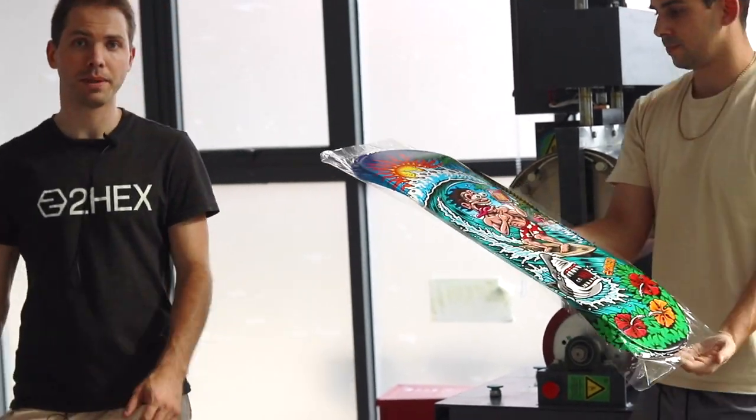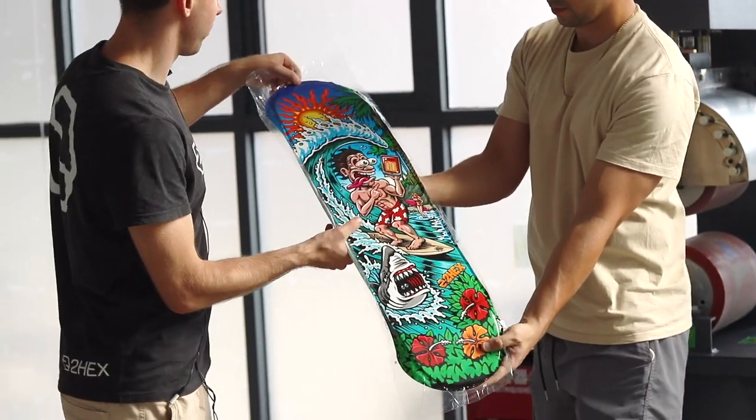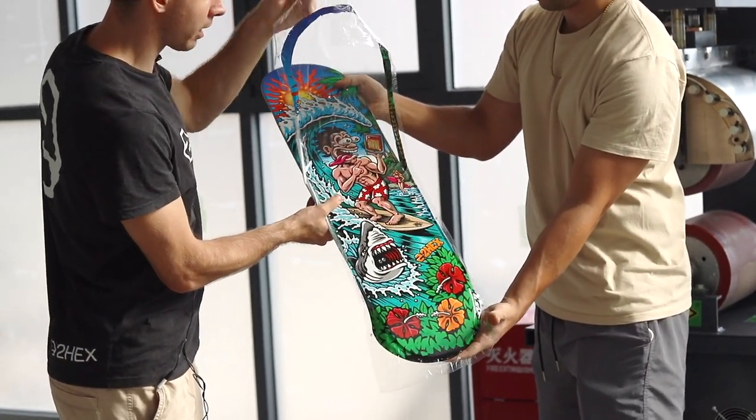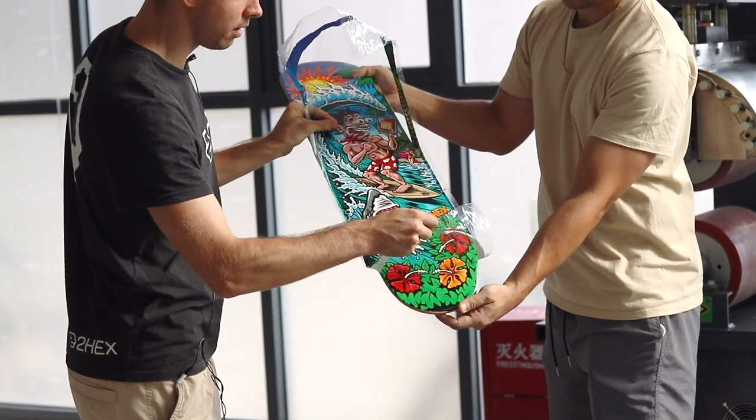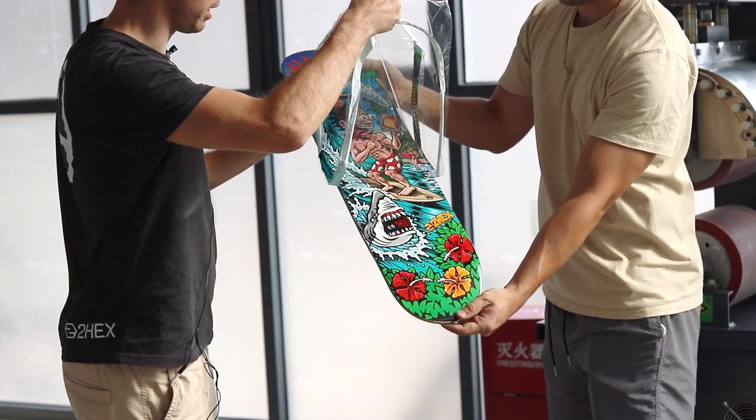After printing on the deck you can peel off the heat transfer, starting from the nose and the tail and finishing in the middle.